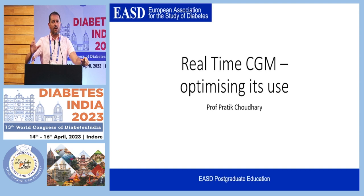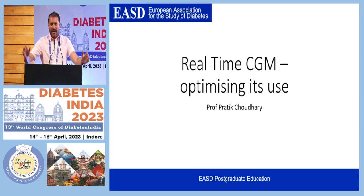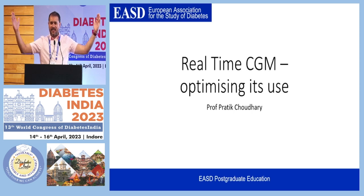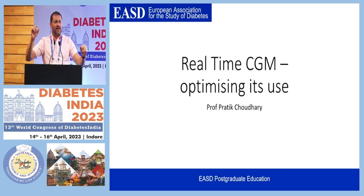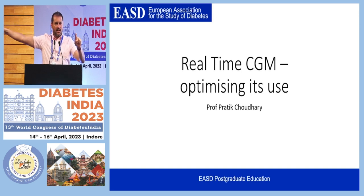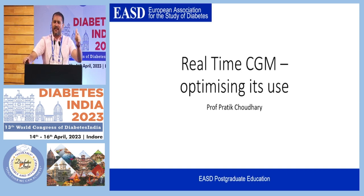The 14-day recommendation that Abbott uses is based on work by Rich Bergenstoll. They used data from type 1 diabetes, took a long duration of data, and started cutting it down, asking: after how many days do you still get the same result as three months of data? I've done the same analysis with a slightly different angle. The bottom line is it depends on the patient's stability.